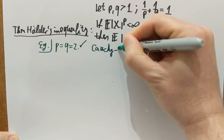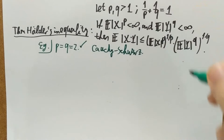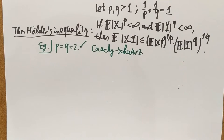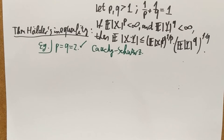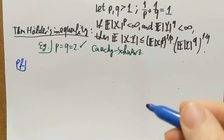This might be familiar from linear algebra — a very similar inequality is true for vectors. Random variables can be considered as some kind of vectors, and these combinations can be considered as some kind of norms. For example, the square root of the second moment is like a length, like a second norm. So Cauchy-Schwarz is a consequence of Hölder. Let's prove this — the proof is pretty interesting. The proof I'll show you is actually a consequence of the concavity of the log function.